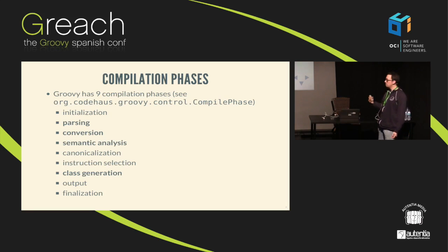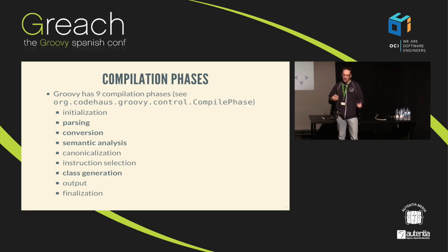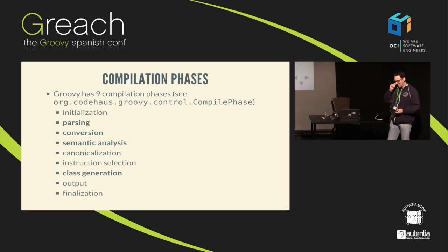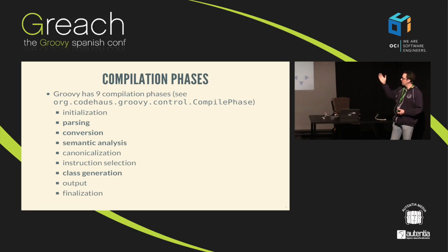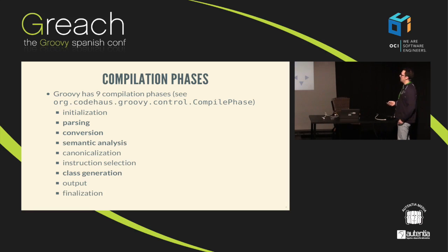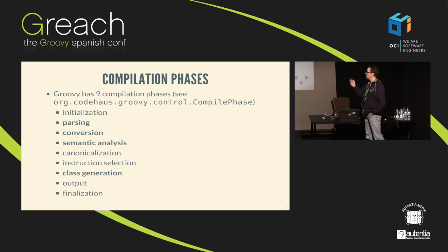So now that we know that, we're going to dig into how we generate those classes and those bytes from source. Groovy has what we call different compilation phases — for Groovy we have nine. For some other languages there are much more than that; I think Scala has more than 30 phases. Sometimes for us as language designers those nine phases are enough, sometimes they're not. Since the inception of Groovy basically this hasn't changed much. I'm going to focus on the bold ones; the others are not as interesting.